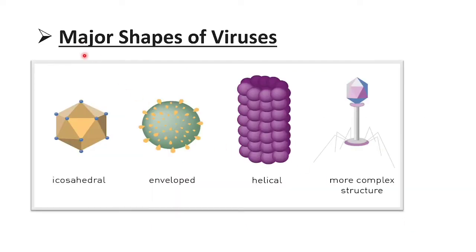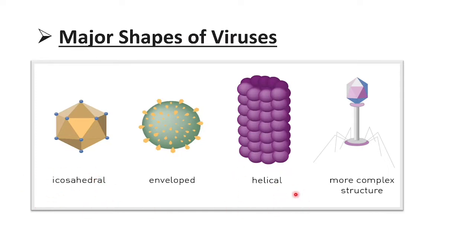Let's see the major shapes of viruses: icosahedral, enveloped, helical, and more complex structures. The bacteriophage is an example of a complex structure. These four are the major shapes of viruses. Out of these, icosahedral and helical are the most common and major shapes. You will see many viruses having icosahedral and helical shapes.